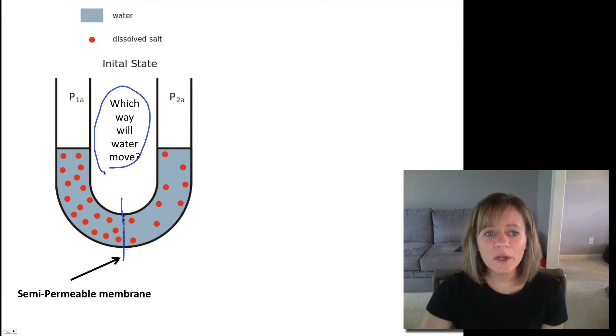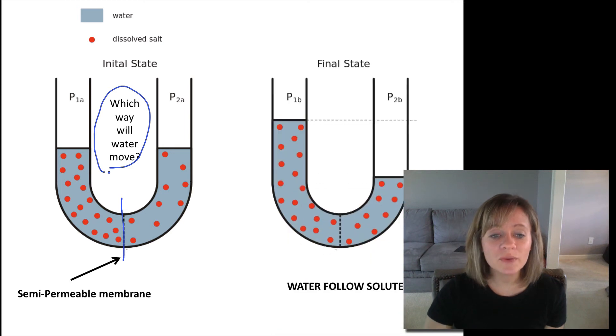Try to answer this question. Which way will the water move? Remember water follows solute. Remember that water is diffusing down its own concentration gradient. So water is going to go from high to low. And hopefully you answered that it's going to move that way. And so water is going to move from high water to low water or it'll just follow the solute because it wants to even out all that solute. And so the final state is going to have the left side have more water in it because that's the direction the water moved.